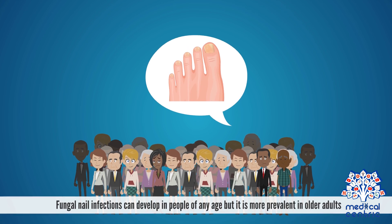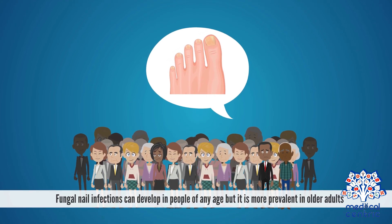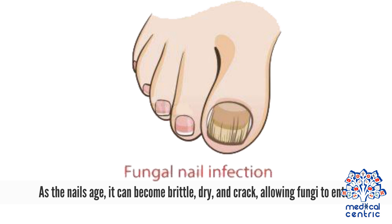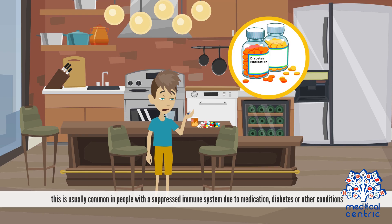Fungal nail infections can develop in people of any age, but it is more prevalent in older adults. As the nails age, they can become brittle, dry, and crack, allowing fungi to enter. In severe cases, fungal nail infection can cause permanent damage to the nails and may lead to other serious infections that spread beyond the feet. This is usually common in people with a suppressed immune system due to medication, diabetes, or other conditions.